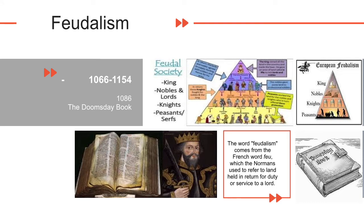By 1086, William wanted to know exactly who owned which piece of land and how much it was worth. He needed this information so that he could plan his economy, find out how much was produced and how much he could ask in tax. He sent a team of people all through England to make a complete economic survey. His men asked all kinds of questions at each settlement: How much land was there? Who owned it? How much was it worth? How many families, ploughs and sheep were there?